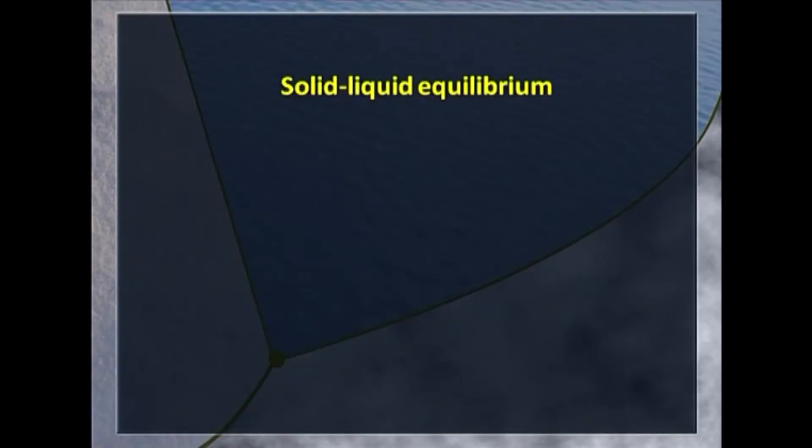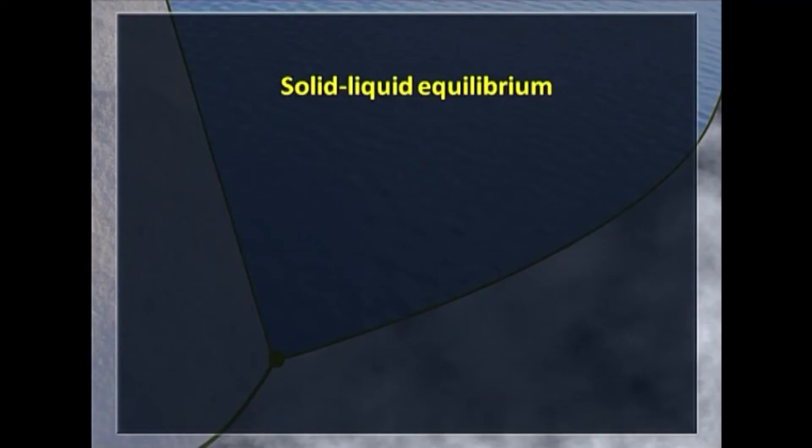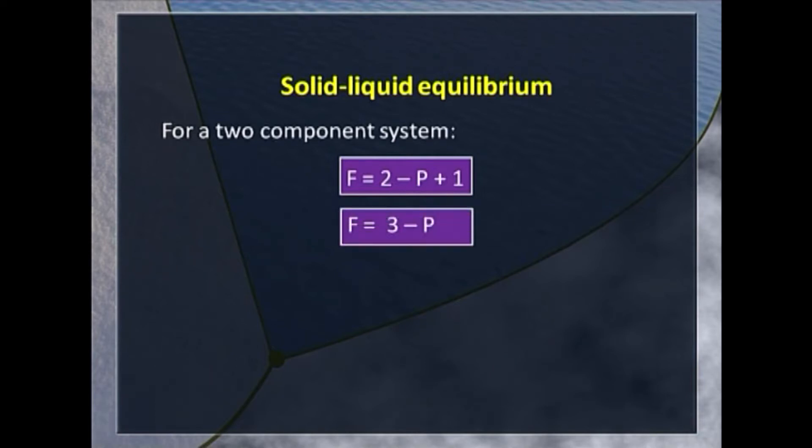Let us start with solid-liquid equilibrium. In these systems, the gas phase is absent and hence these systems are called condensed systems. Since gas is absent, generally we study the phase diagram at constant pressure, and the phase rule takes the form F equals C minus P plus 1. Of course, it implies that the pressure is kept constant. This form of phase rule is called the condensed phase rule equation. For a two-component system, F equals 2 minus P plus 1, that is F equals 3 minus P.